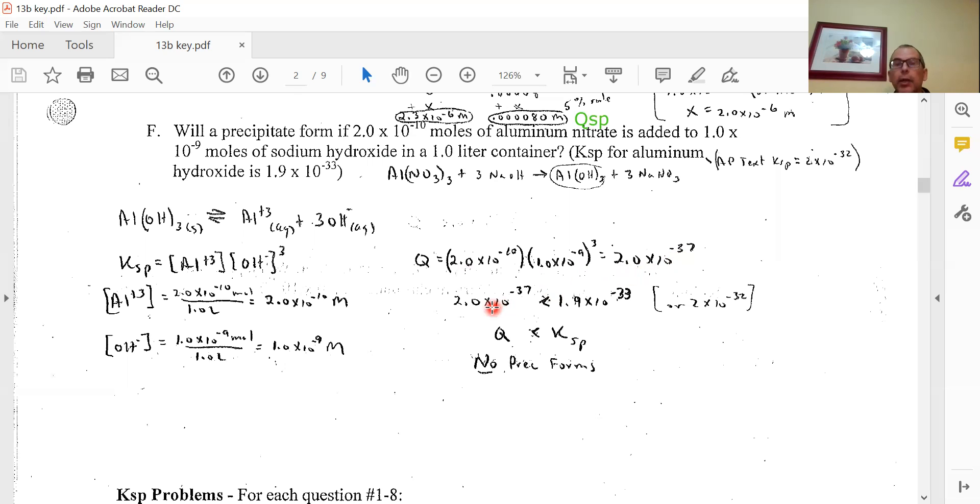This is smaller than 1.9×10^-33. Even though aluminum hydroxide is very insoluble as shown by this Ksp, we have such small amounts that Q is less than Ksp. This means the reaction will shift toward products, and everything will dissolve. All the Al^3+ and OH- at these concentrations does dissolve - no precipitate forms.